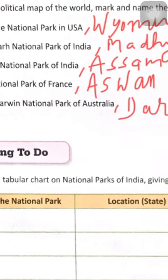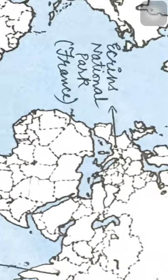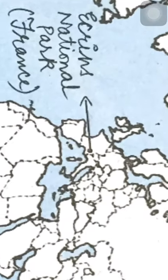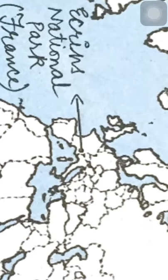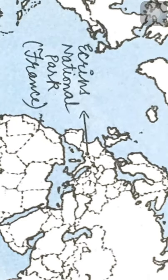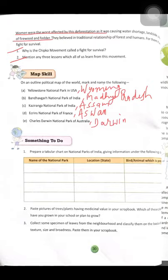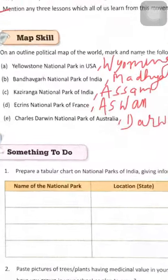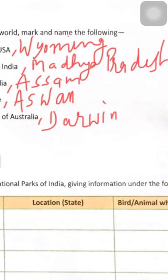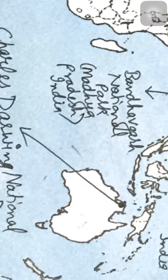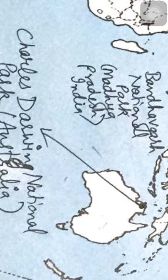Fourth: Akron National Park of France — identify France in Europe, above Africa, and mark the exact location in the south. Use pencil only, not pen. Fifth: Charles Darwin National Park of Australia, located in Darwin at the northern boundary of the Australian continent.